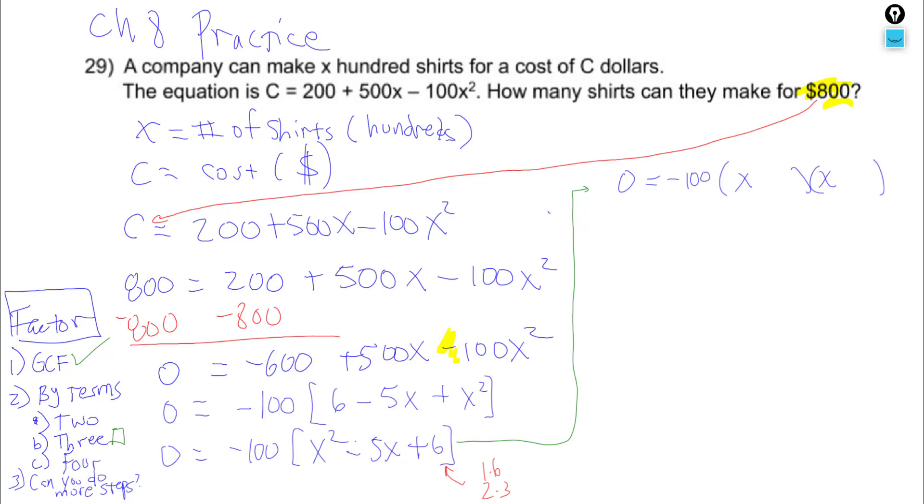But we're multiplying to positive 6. So, we're going to have to have a plus plus and a minus minus. And the only way to get that to work is minus 2, minus 3.